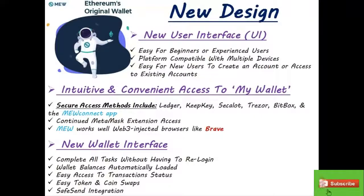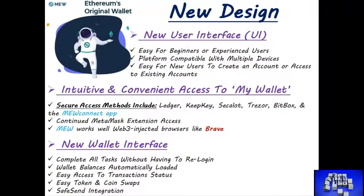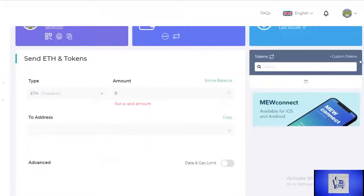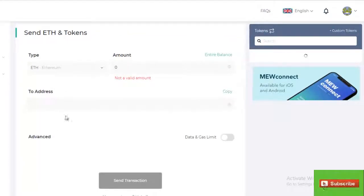One of the other good features is their integration with Simplex, which basically offers users of Mew the ability to buy ETH with a credit card. That's great if you're just starting out and want to work primarily within the Ethereum ecosystem. You're able to manage all of your Ethereum tokens in your Mew — some 1,100 of them currently. And if the token you're looking for is not listed, you can still add those custom tokens, just as you could before with Vintage Mew.